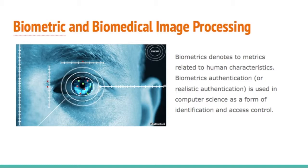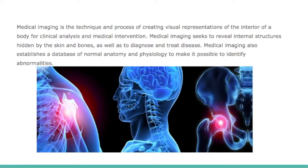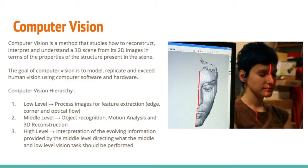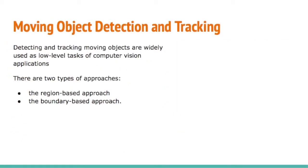Biometric and biomedical image processing: biometrics denotes metrics related to human characteristics. Biometric authentication is used in computer science for identification and access control. Medical imaging is a technique for creating visual representations of the interior of a body for clinical analysis and medical intervention. Computer vision is a method that studies how to reconstruct, interpret, and understand 3D scenes from 2D images in terms of the properties of the structure present in the scene. The goal of computer vision is to model, replicate, and extend human vision using computer software and hardware.